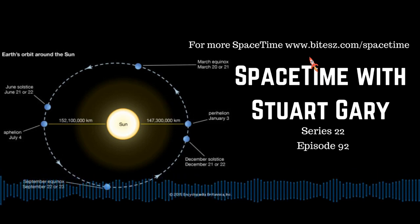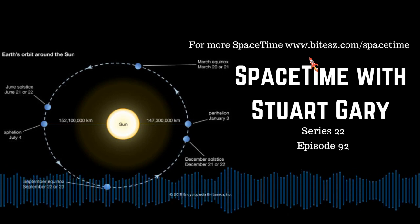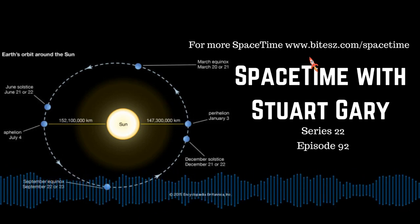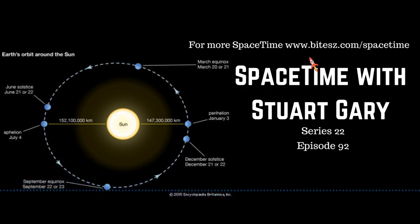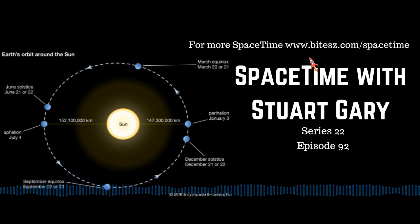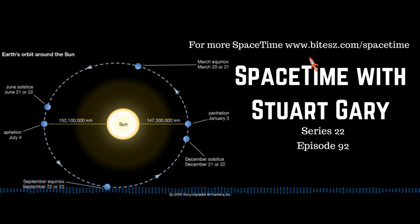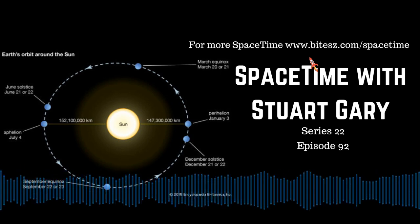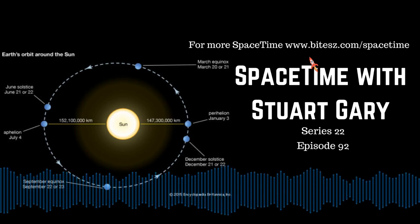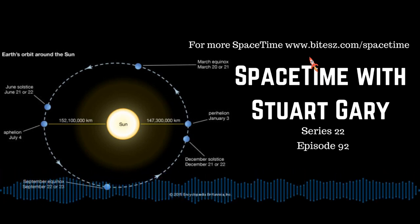Neutrinos are elementary subatomic particles generated through radioactive decay in stars, in supernovae, in nuclear explosions, particle accelerators, and atomic reactors. The neutrino is so named because it's electrically neutral, and because its rest mass is so small it was long thought to be zero.